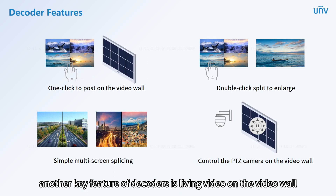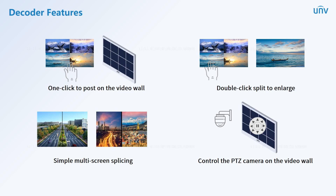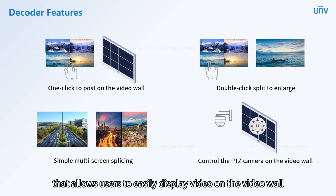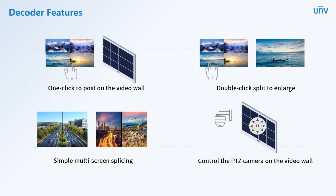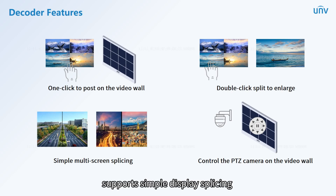Another key feature of decoders is displaying live video on the video wall. The operation is simple — one click to post on the video wall — allowing users to easily display video on the video wall. It also supports double-click to zoom in on the screen, supports simple display splicing, and supports PTZ control on the video wall.